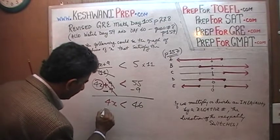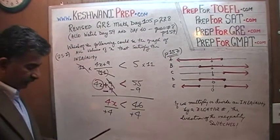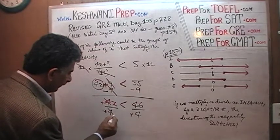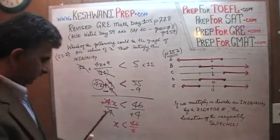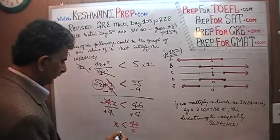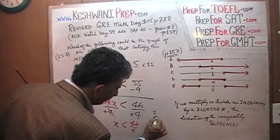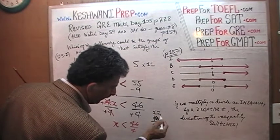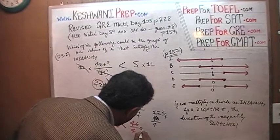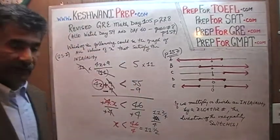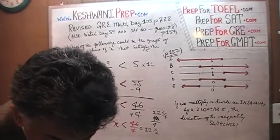Now divide both sides by 4. Since this is a positive 4, the direction does not switch — it remains the same. We are left with x is less than 46 over 4. Let's work that out: 46 divided by 4 gives 11 with a remainder of 2, and 2 over 4 is one half. So x is less than 11 and a half. It is strictly less than — not less than or equal to — just less than.